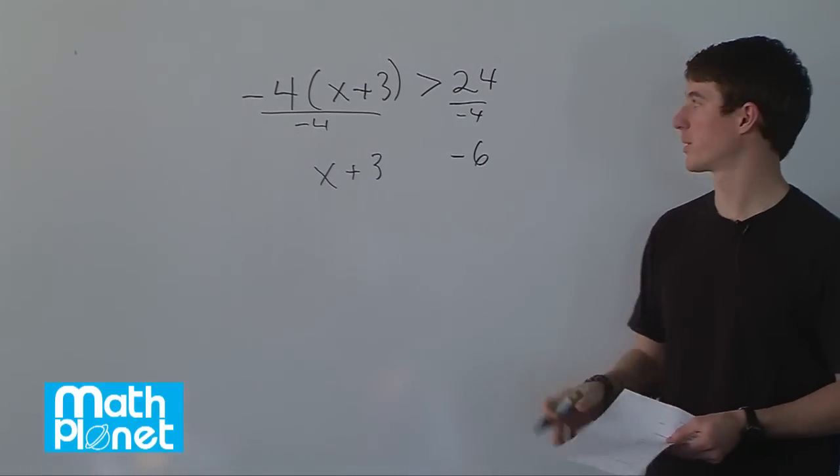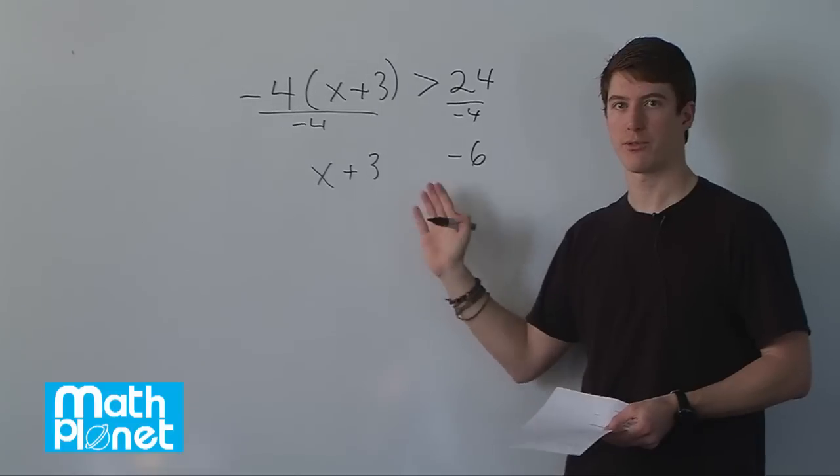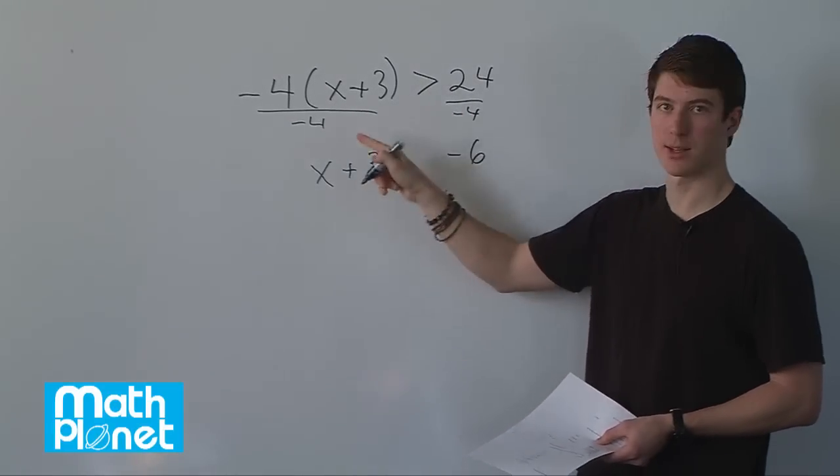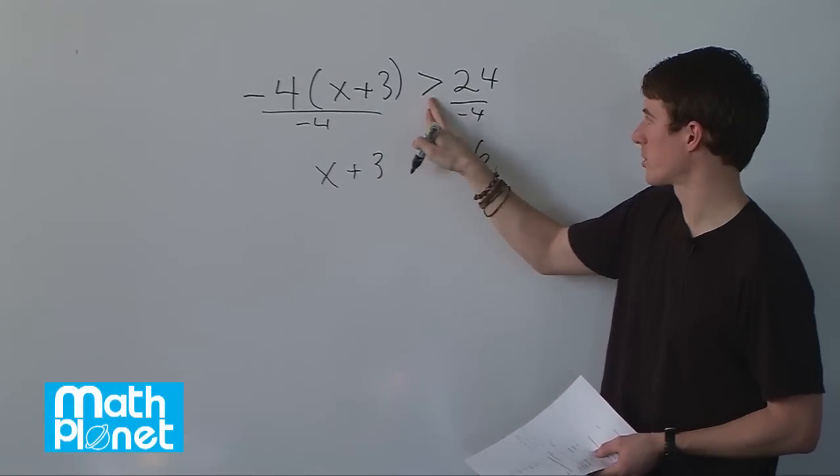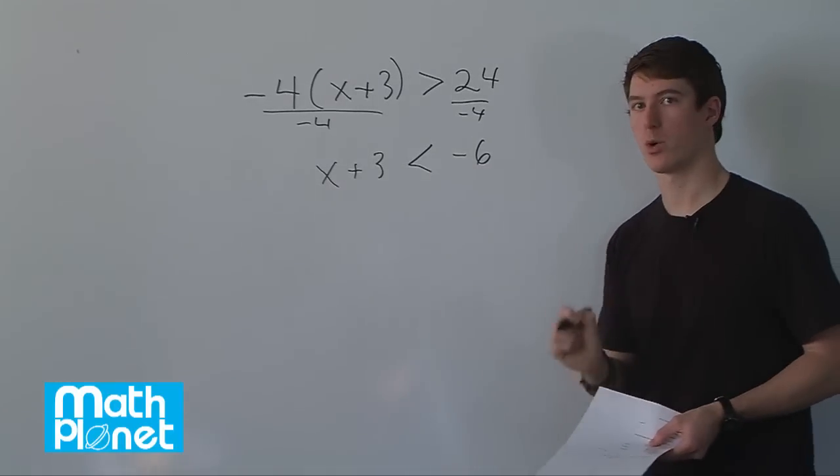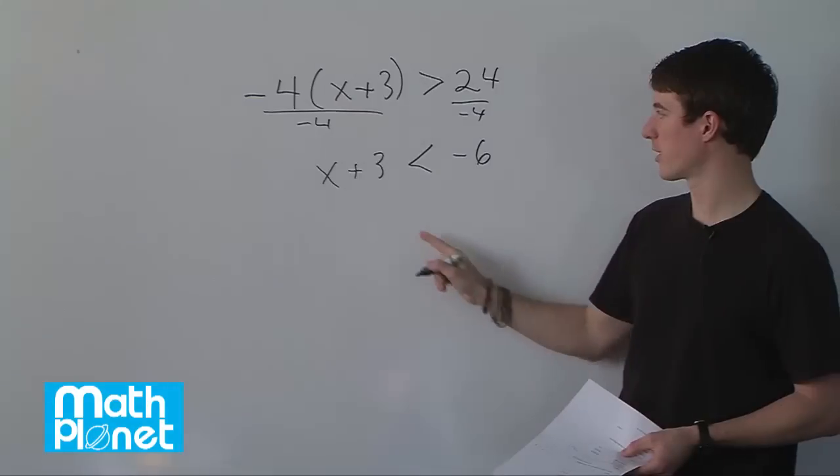But now we have to be careful because there's one difference here from regular algebraic equations. If we're multiplying or dividing by a negative number, we need to turn this around. So it went from greater than to less than. That's important. That's the one difference from regular equations in algebra.